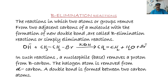So what are elimination reactions? These are reactions in which two atoms or groups are removed from two adjacent carbons of a molecule with the formation of a new double bond. These are called beta elimination reactions, or simply elimination reactions.